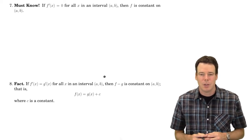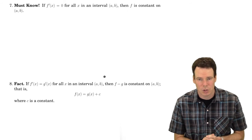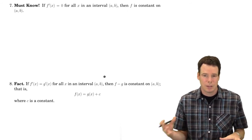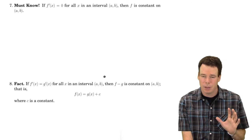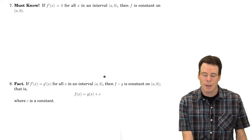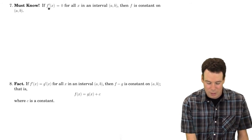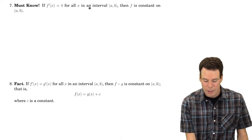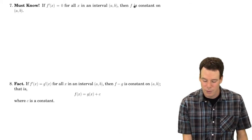These next two results are applications of the mean value theorem, where we show that if the derivative of a function has a certain property, that tells us something about the function itself. If a function is constant, its derivative is 0. Can we say something in the opposite direction? If we know the derivative is 0, can we conclude the function is constant? This result tells us yes, under certain conditions. Suppose f'(x) = 0 for all x in an interval (a,b). Then the function has to be constant on that interval.